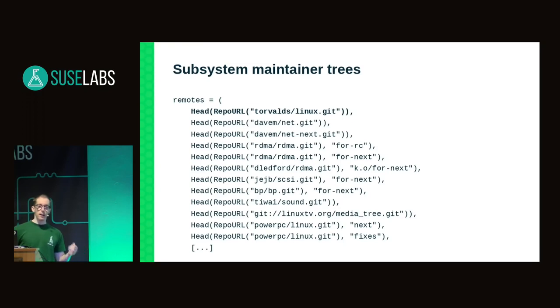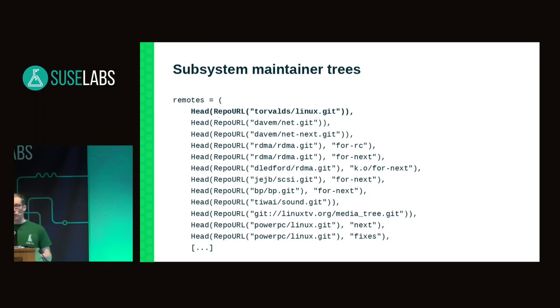It is absolutely not necessary for every user of the sorting scripts to have all of these repositories available locally. It's only required to have the mainline Linux.git repository; each of the others is optional. This results in a lot of complexity inside the sorting scripts, because different users are going to have a different reference for upstream commits — not all repositories will be available locally, and even when they are, they may not be equally fresh.